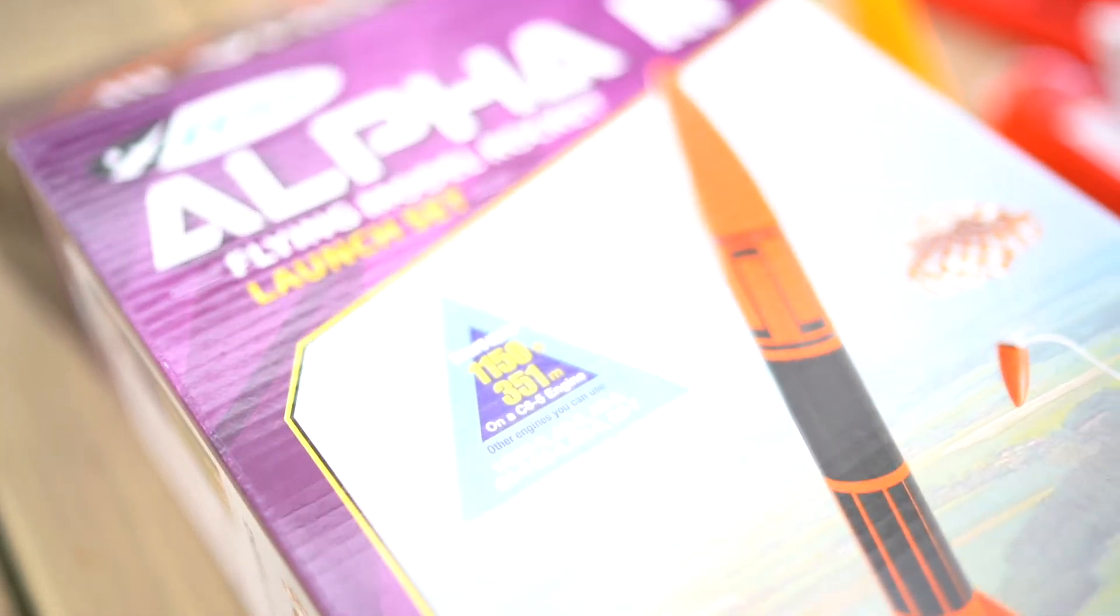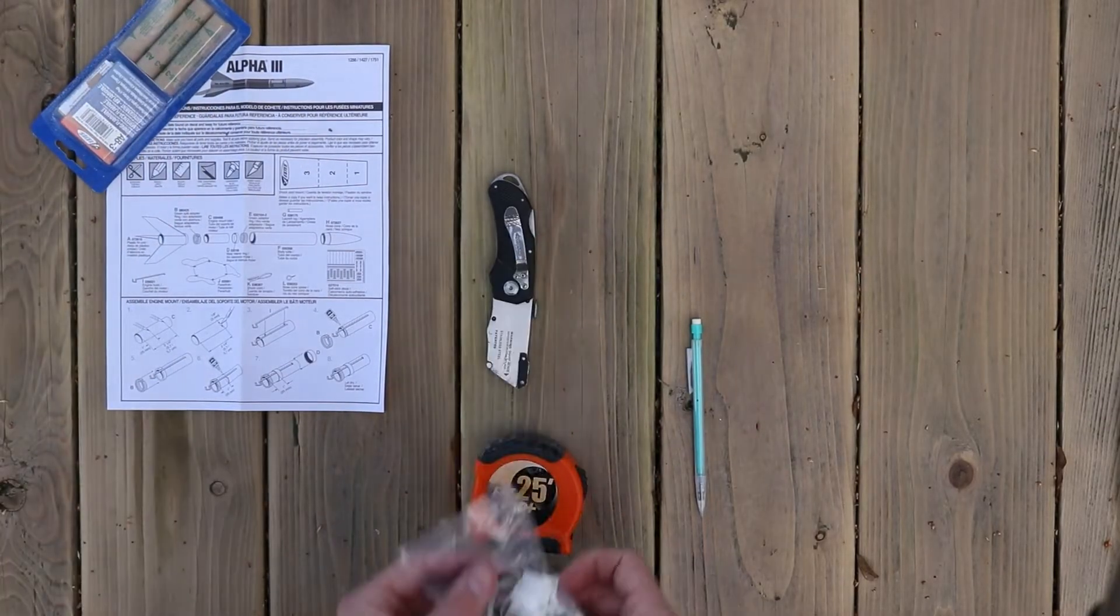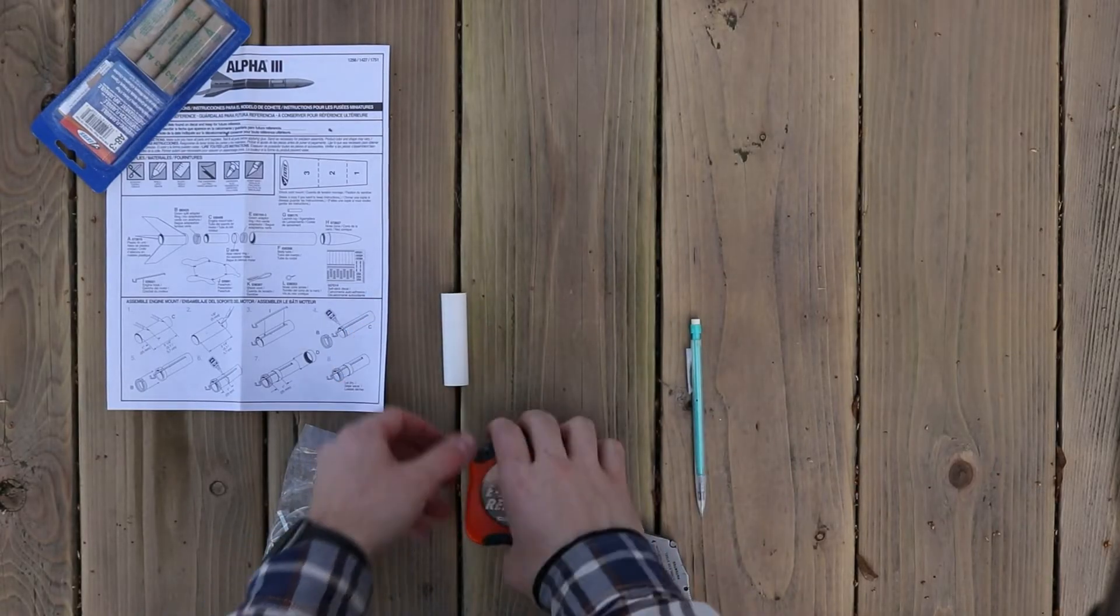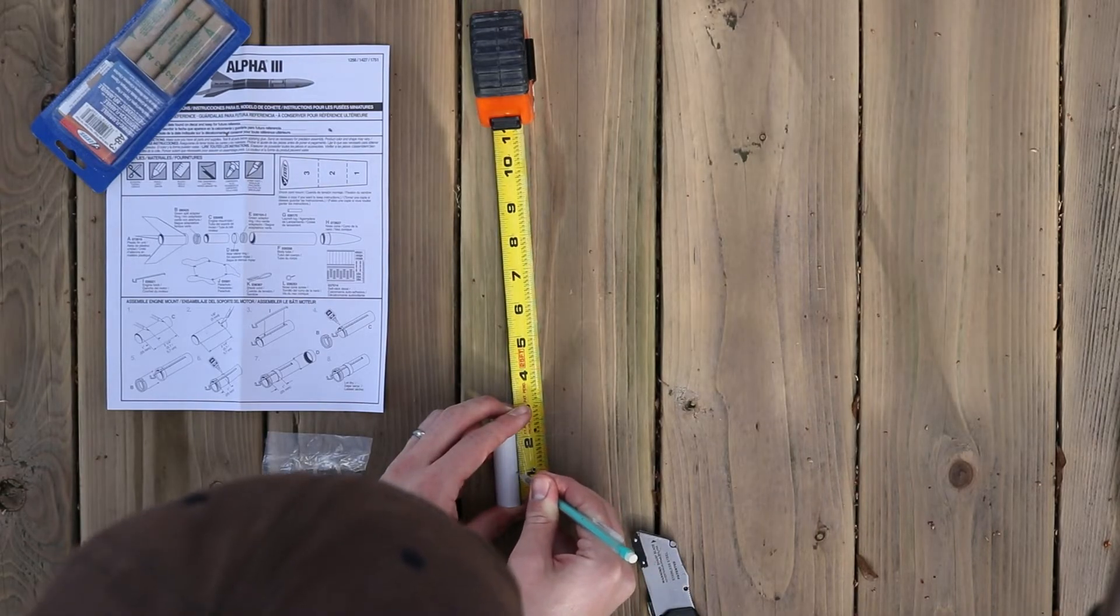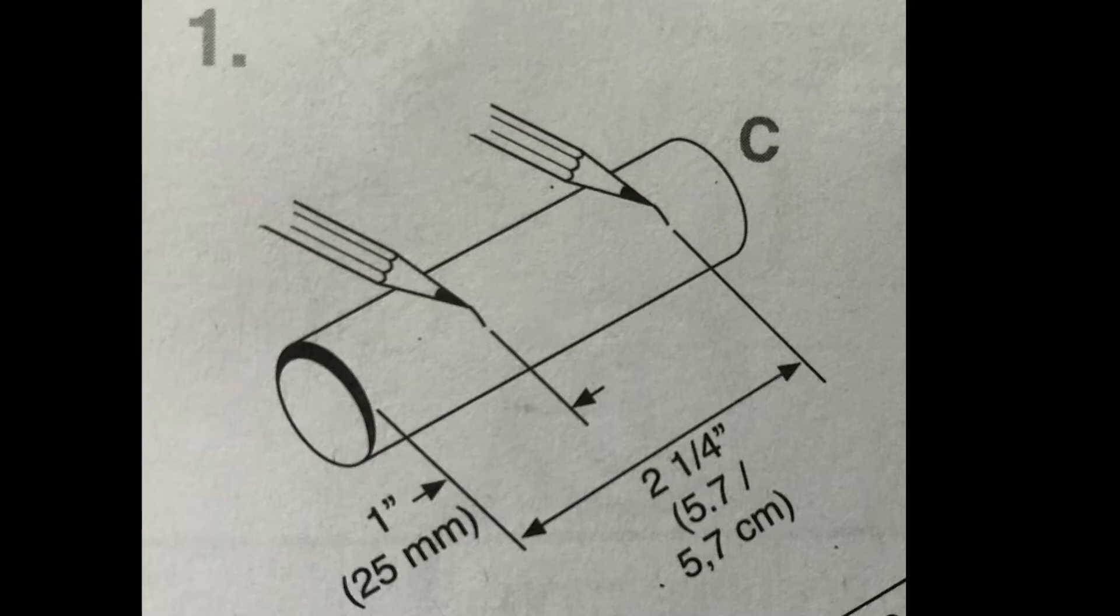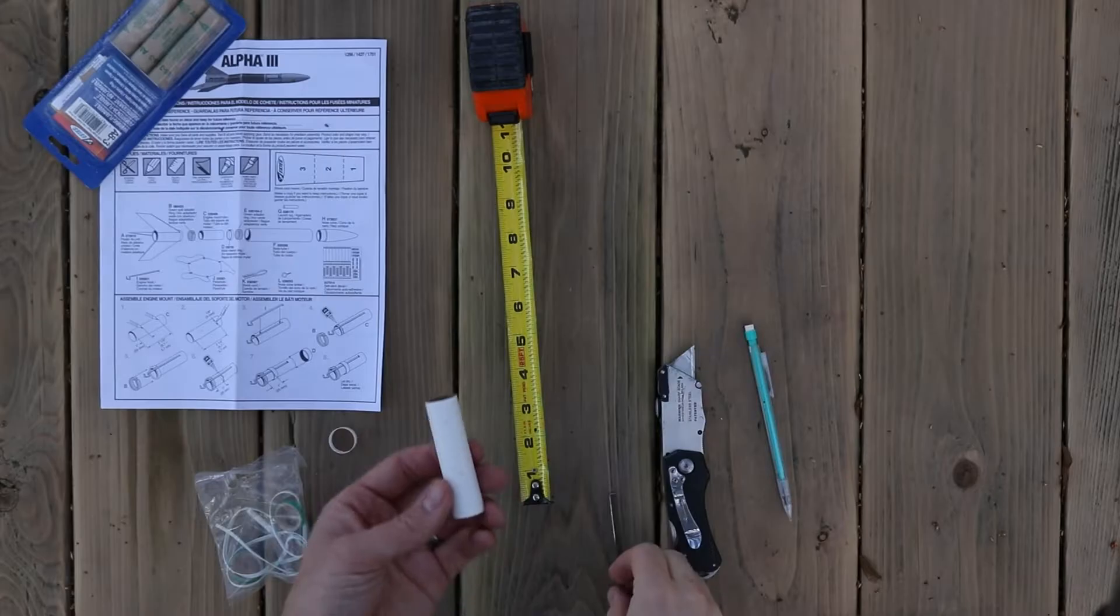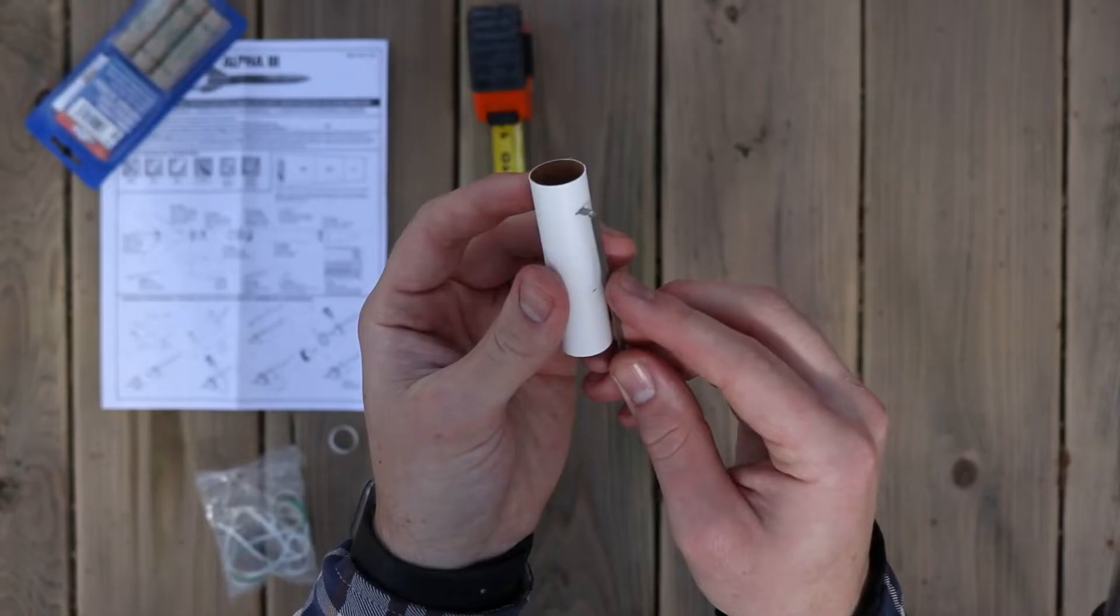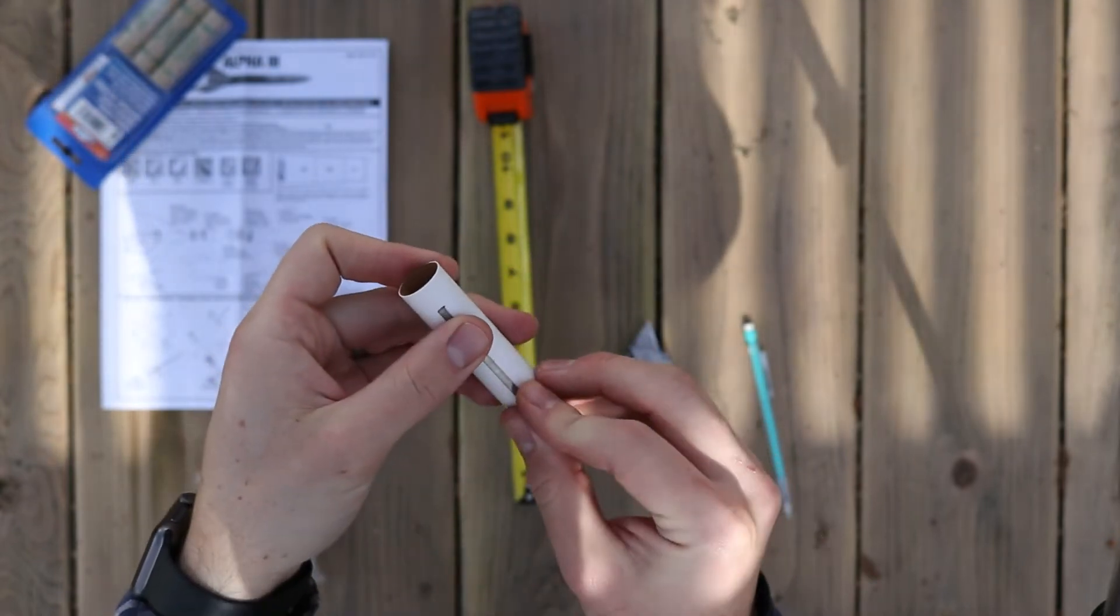Let's get to the main part of this video, assembling the Alpha 3. Let's get out the engine mount tube, ruler, hobby knife, and pencil. Go ahead and open the bag with all the tiny pieces, but be super careful to not lose any of them. Line up the engine mount tube with the ruler and use the pencil to make a small mark on the engine mount tube at 1 inch and 2 and 1 quarter inches. Next, we'll make a small cut in the engine mount tube at the 2 and 1 quarter inch mark. It only needs to be an eighth of an inch wide to fit the engine hook into. Make the incision and slide the engine hook into the engine mount tube.